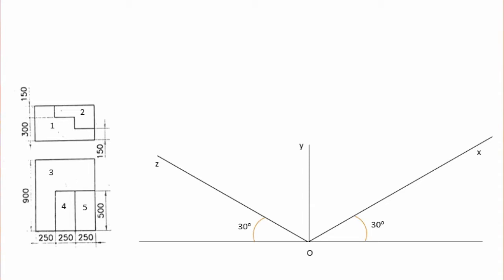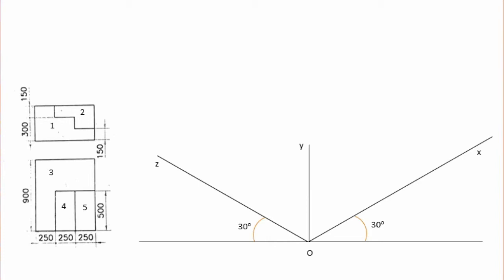If you want to create a rectangle box, you can create a plan view. If you want to create an isometric view, it will be easier to create a box with length, height, and width. The rectangle box has a width of 750 mm and height of 450 mm from the front view, and the top view is 900 mm. So the rectangle box dimensions are 750 by 450 by 900 mm.